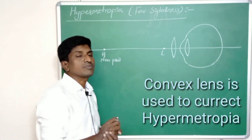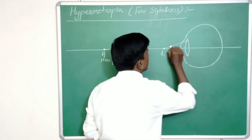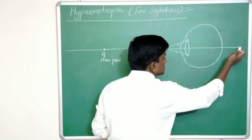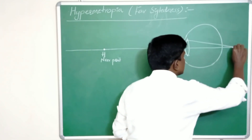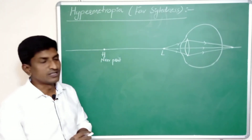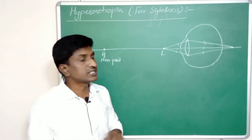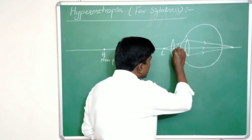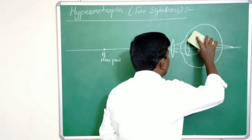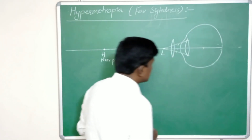For correction of hypermetropia, consider light rays coming from the least distance of distinct vision. After refraction by the eye lens, these light rays converge outside the retina because the minimum focal length of the eye lens is greater than 2.27 cm. So the image is formed outside and we cannot see the object clearly. To fix this, we use a convex lens.